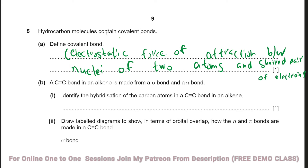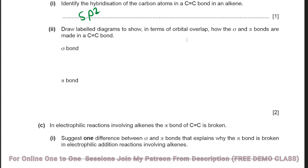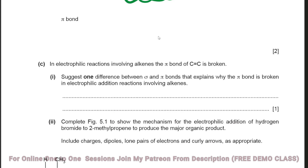Question 5: Define covalent bond. It is the electrostatic force of attraction between the nuclei of two atoms and a shared pair of electrons. In a carbon-carbon double bond in an alkene, the hybridization of the carbon atoms is sp2. The sigma bond involves head-to-head orbital overlap, while the pi bond involves parallel (side-by-side) orbital overlap.